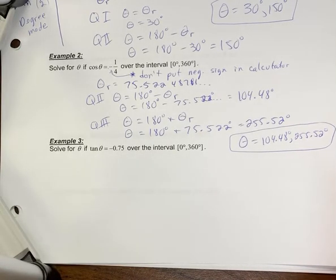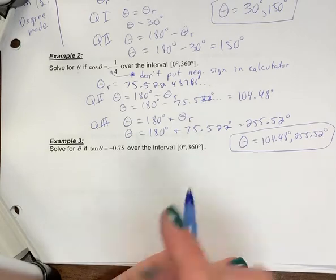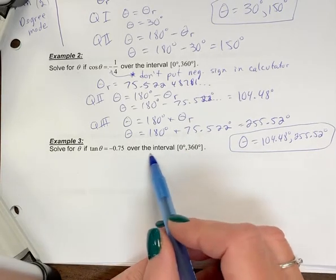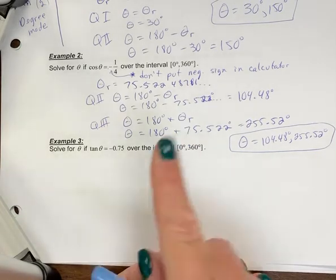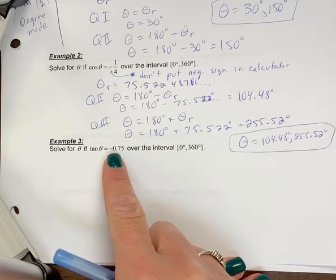Example 3: solve for theta if tan theta equals negative 0.75 over the interval 0 to 360 degrees. So again, that interval is always going to be stated. It doesn't matter if it's a decimal or a fraction, you're going to do the question the same way.